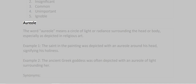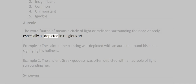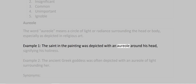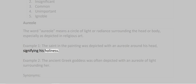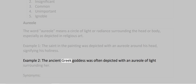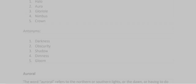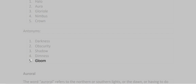Aureole. The word aureole means a circle of light or radiance surrounding the head or body, especially as depicted in religious art. Example 1: The saint in the painting was depicted with an aureole around his head, signifying his holiness. Example 2: The ancient Greek goddess was often depicted with an aureole of light surrounding her. Synonyms: 1. Halo 2. Aura 3. Glory 4. Nimbus 5. Crown. Antonyms: 1. Darkness 2. Obscurity 3. Shadow 4. Dimness 5. Gloom.